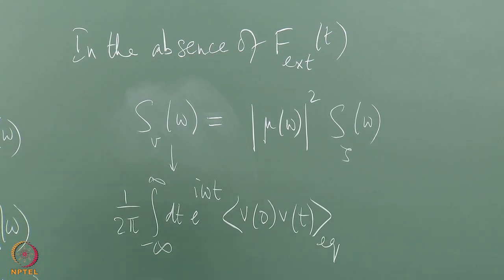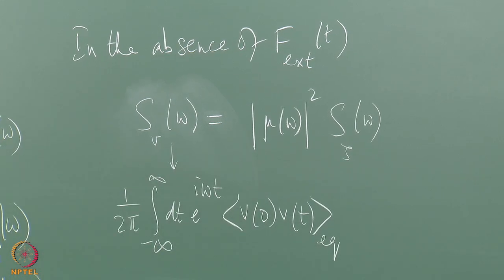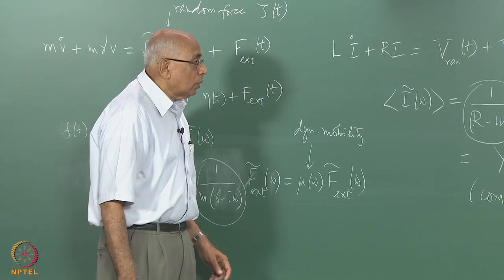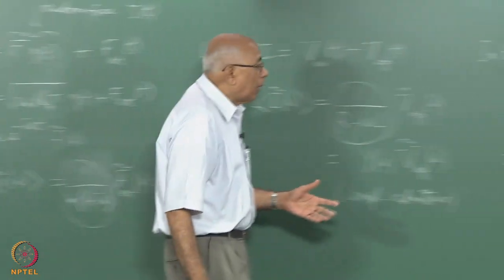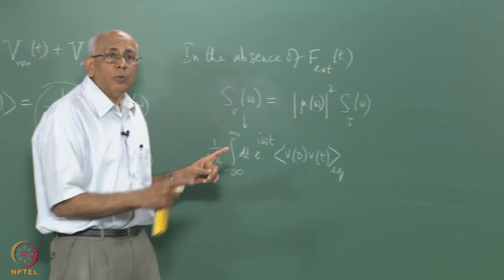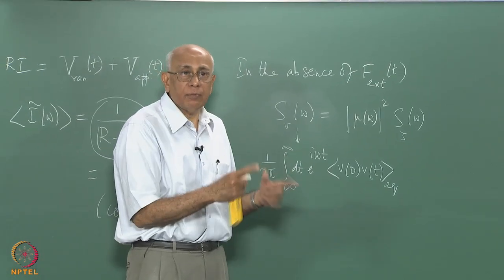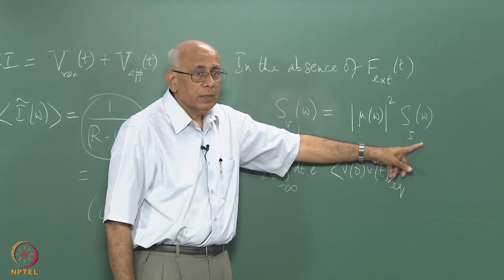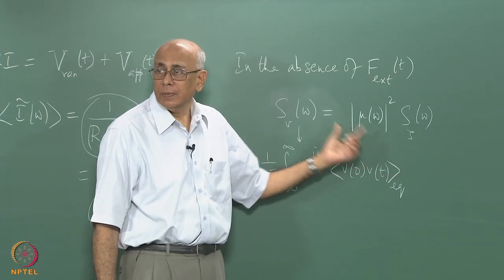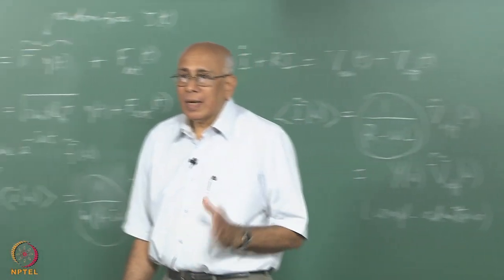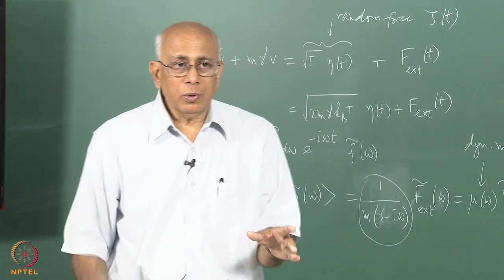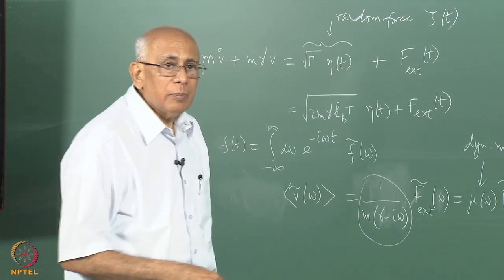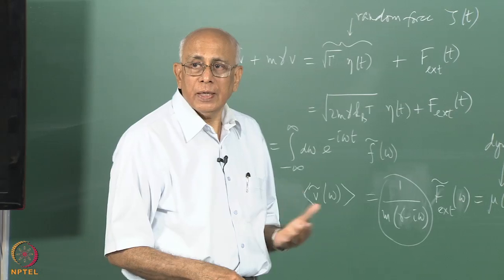This is a non-trivial relationship. The mobility measures the average response to unit applied force at a given frequency. On the other hand, the power spectrum of the output variable — the velocity — due to thermal fluctuations is related to the power spectrum of the noise through precisely the same |μ(ω)|². This means there is a deep connection between response to an applied perturbation and spontaneous fluctuations in the absence of that perturbation — this is the gist of linear response theory.